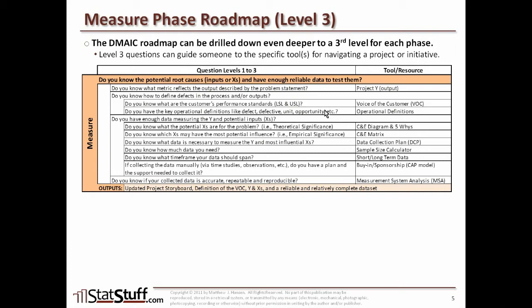Once you can answer those, you move on to the next second-level question: do you have enough data measuring the Y and the potential inputs — the x's? If you're not sure, you begin asking the third-level questions here. Starting with: do you know what the potential x's are for the problem? These are things expressing theoretical significance — what makes sense from a theoretical standpoint. The C and E diagram — the cause and effect diagram, also called the Ishikawa diagram or fishbone diagram — as well as the five whys, are tools that help us understand what those potential x's are at that level.